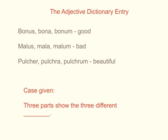You'll notice there's no single gender listed — where a noun will have one gender, adjectives have all three genders listed, all in one case. So looking at bonus, bona, bonum: the 'us' ending and the 'a' ending are both nominative. There are three genders — this one looks masculine, this one looks feminine, and this one as neuter can also be nominative. The case given in a Latin dictionary entry for adjectives is, of course, the nominative case.